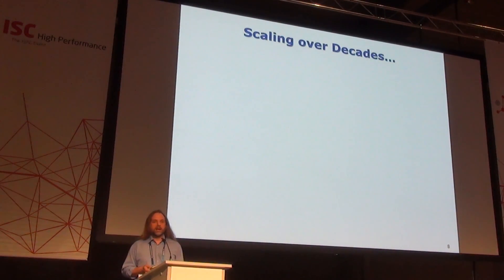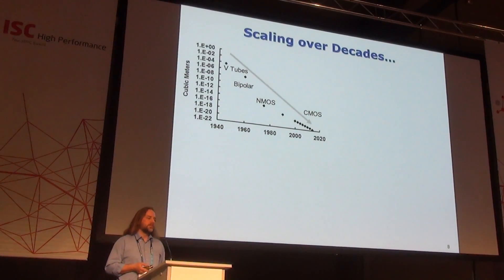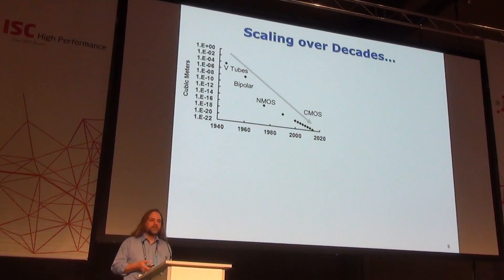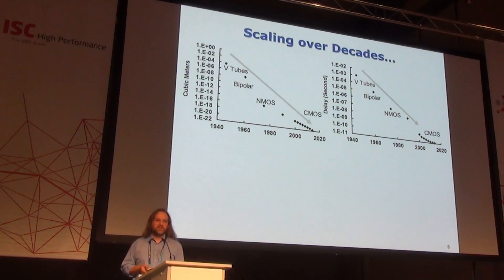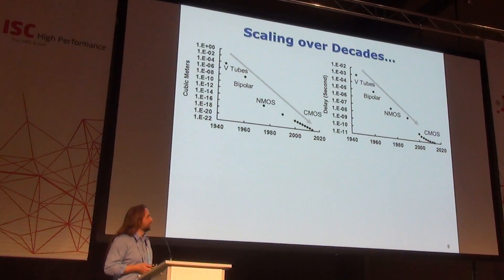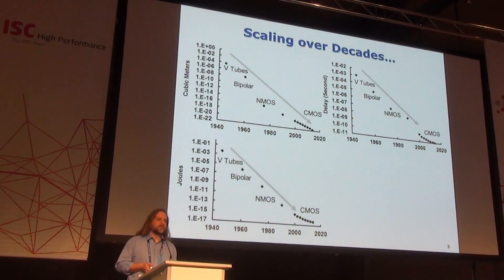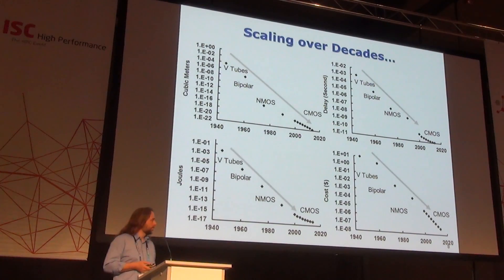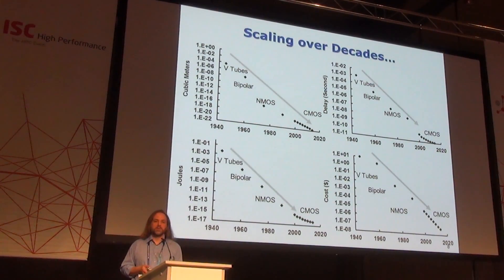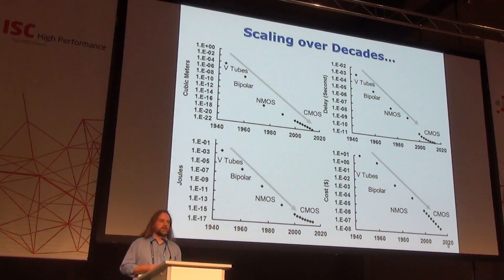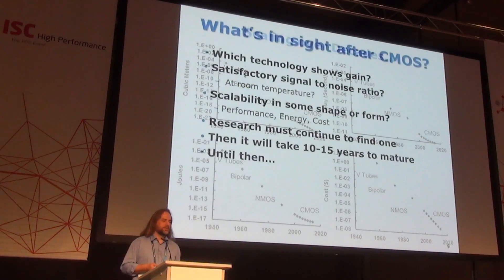Looking at the scaling over the decades, in cubic meters — what am I doing in a technology to achieve something — you get a very nice curve. It is continuing to scale even though Moore's Law is over according to the rumor, and CMOS is over according to the rumor. I do chuckle at the notion of one nanometer. Looking at delay in seconds on these same technology curves — vacuum tubes, bipolar, everything else — it continues to scale nicely. Energy in joules shows a little trouble at the end; it's not quite working the way I want. But cost continues very aggressively. So there's a little sign of trouble, which may be feeding the chicken-little hysteria that Moore's Law is over.